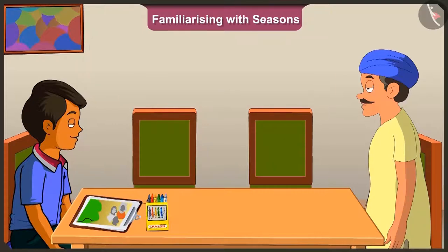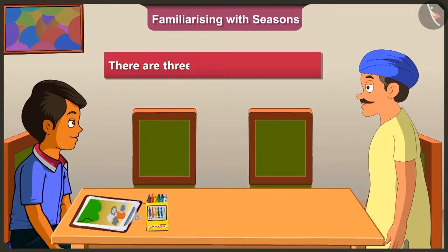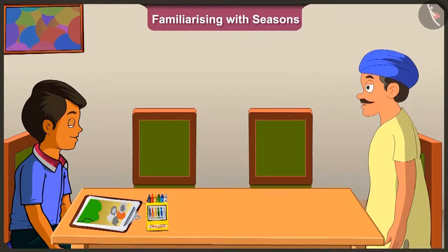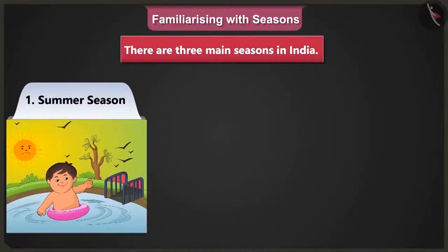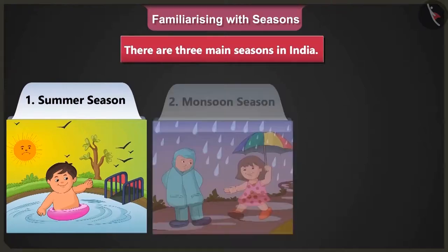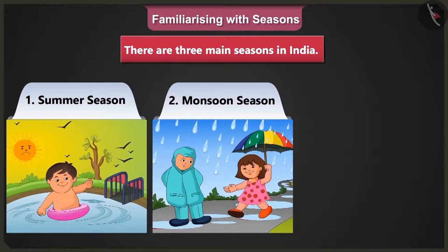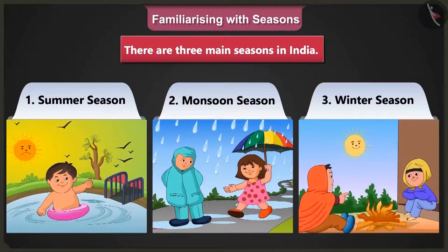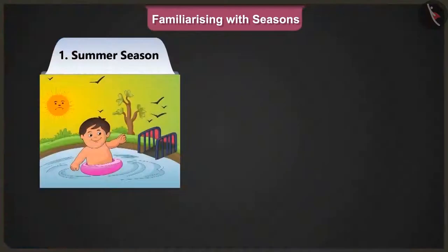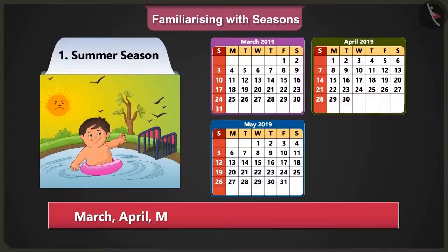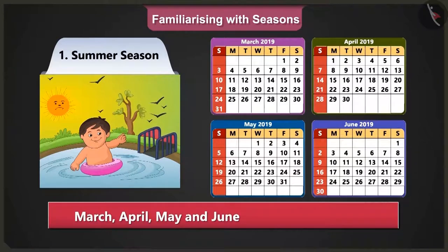So how many seasons are there in our country? There are three main seasons in India. They always come in the same order in the year. What are these three seasons? Hot means summer season. Rains means monsoon season. And cold means winter season. March, April, May and June months are very hot, so these are the summer months.